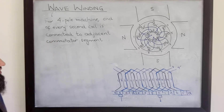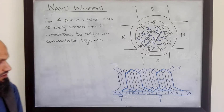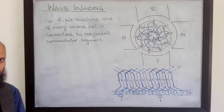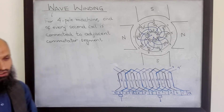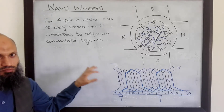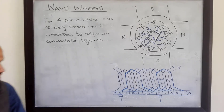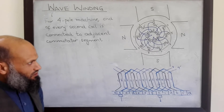And this winding is called wave winding. What is the advantage of this winding? Compared to lap winding, this winding resolves the problem of voltage imbalance. How does it resolve the problem of voltage imbalance?